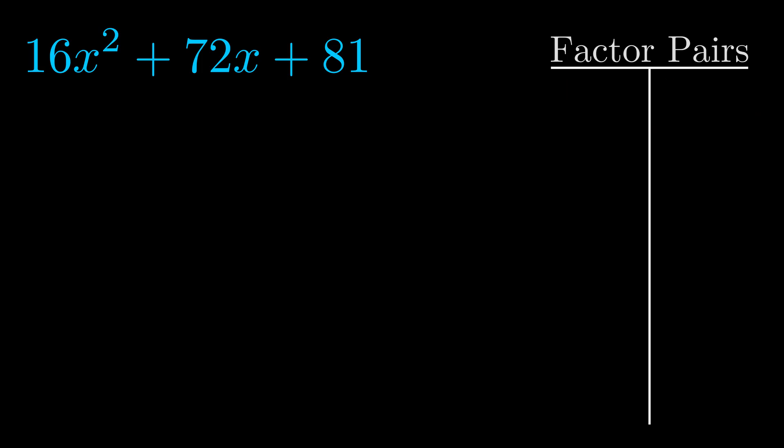Now once we have this factor pair what we want to do is we want to use it to split up the b value.